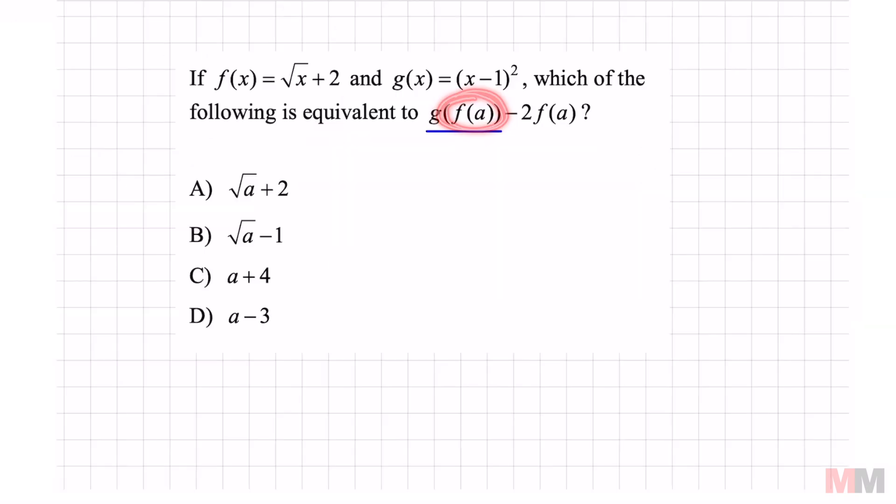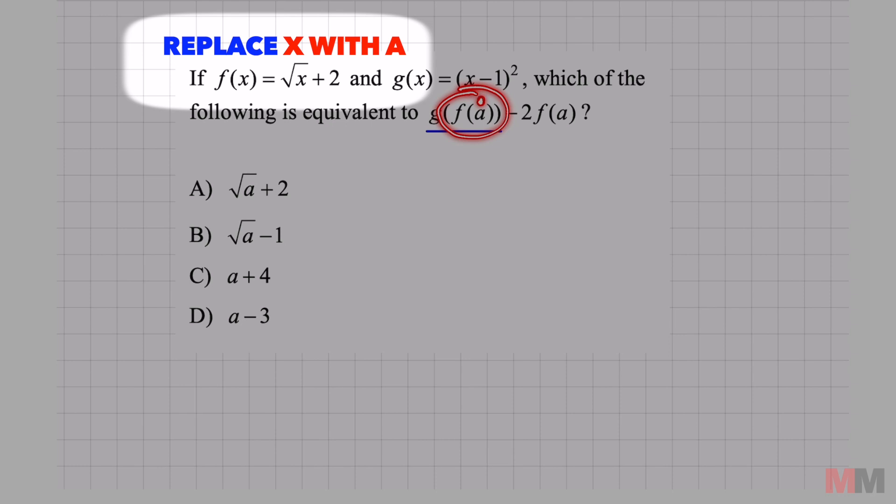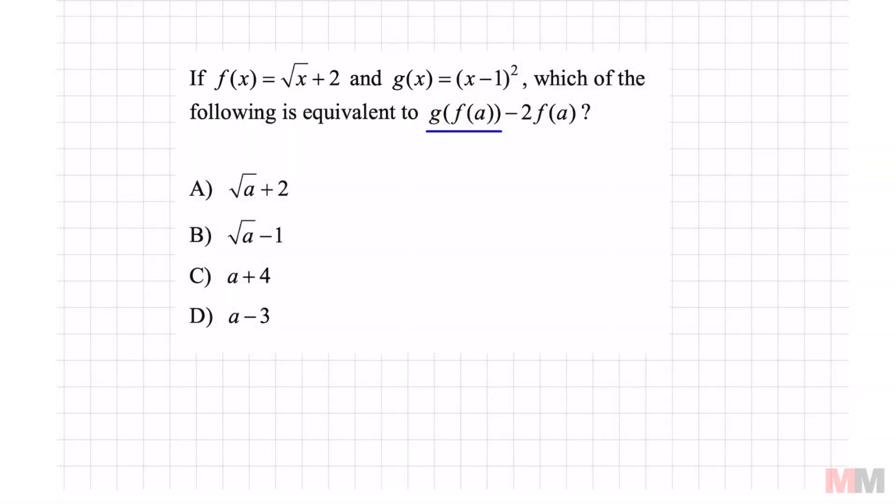We're going to focus on this part and all this part is saying is to plug in an a for wherever you see an x in this function right here. So I'm just going to change this x to an a and rewrite it. It's the square root of a plus 2. That takes care of this part.